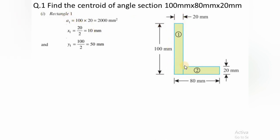For Rectangle 1: area A1 = 100 × 20 = 2000 mm². The centroidal distance x1 from the vertical reference axis is half of 20 mm, so x1 = 20/2 = 10 mm. The centroidal distance y1 from the horizontal reference axis is half of the 100 mm height, so y1 = 100/2 = 50 mm.